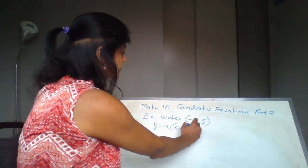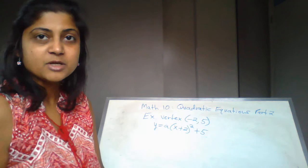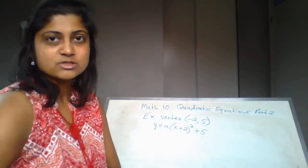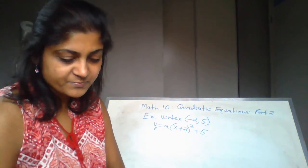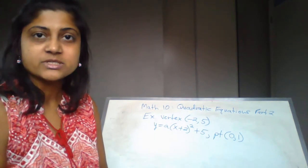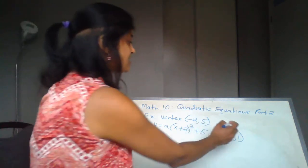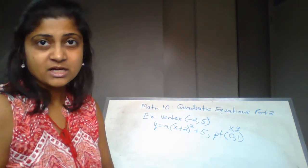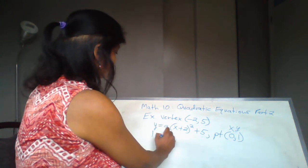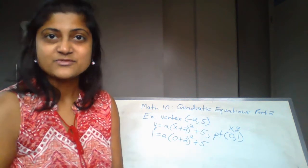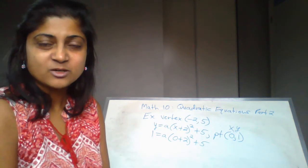The vertex is given as (-2, 5). When plugging into the vertex form, remember to change the sign for the x-coordinate. So: y = a(x + 2)² + 5. Notice I'm not changing the sign for the y-coordinate — the vertex has positive 5, so I leave it as positive 5 outside the brackets. The question also gives a y-intercept of 1.